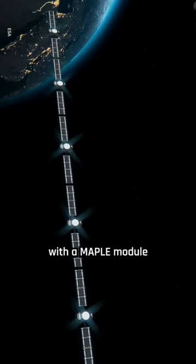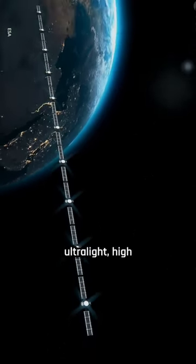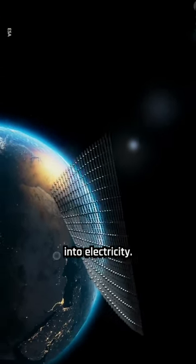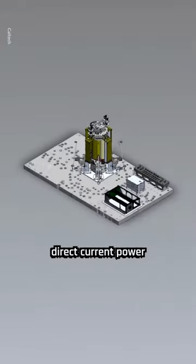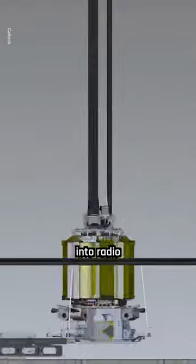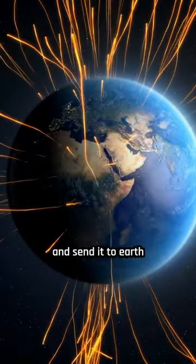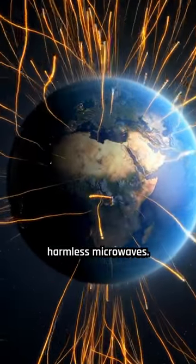The demonstrator is equipped with the MAPLE module, which utilizes ultralight high-efficiency tools to collect solar power and convert it into electricity. It does so by converting direct current power from sunlight into radio frequency power, such as the type used to transmit cell phone signals, and sends it to Earth as significantly harmless microwaves.